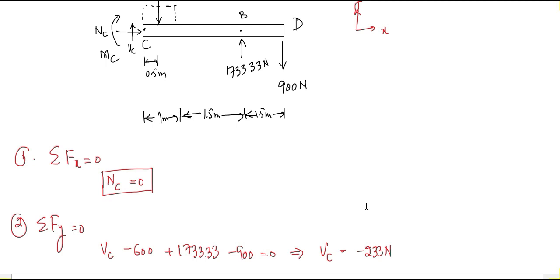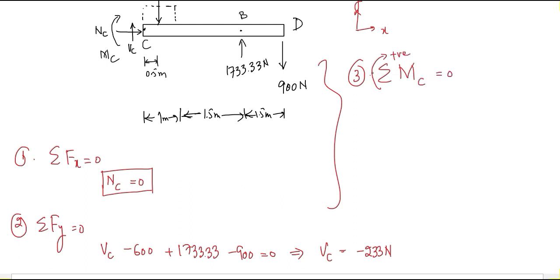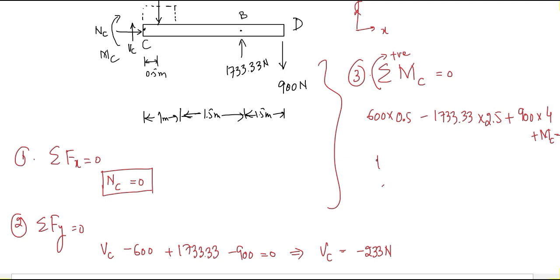Applying the third condition of equilibrium — summation of all moments at point C equals zero, taking clockwise as positive. The moment due to the 600 N force is clockwise with a moment arm of 0.5. The moment due to 1733.33 N is anticlockwise (negative) with a moment arm of 2.5. The moment due to the 900 N force is clockwise with a moment arm of 4. Mc is taken as clockwise and positive. Solving gives Mc = 433 Nm.